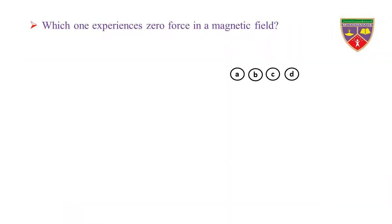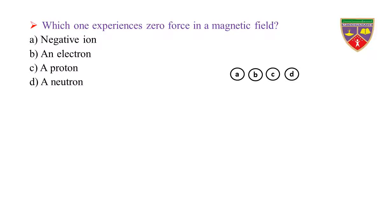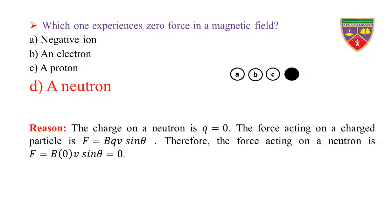Which one experiences zero force in a magnetic field? Option A, negative ion. Option B, an electron. Option C, a proton. Option D, a neutron. The key is neutron. Therefore, the correct option is D.